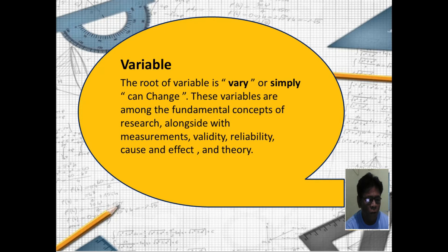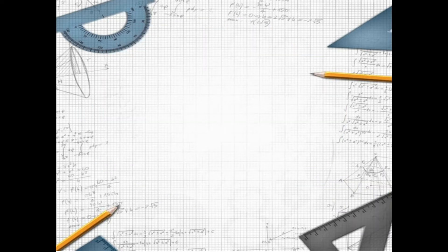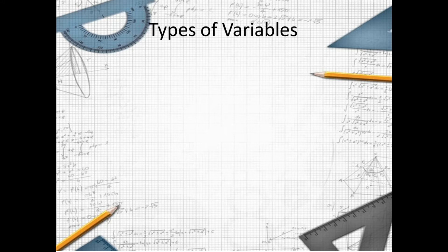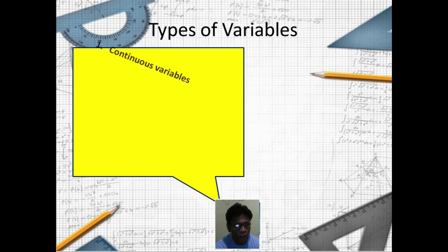Alongside with measurements, validity, variability, cause and effect, and theory, we have types of variables. Number one: continuous variables.